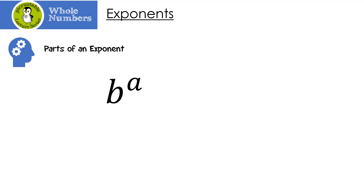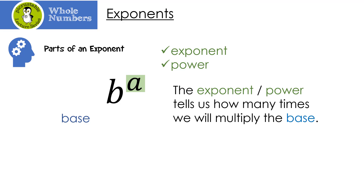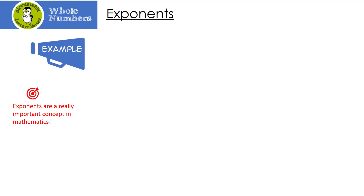Let's look at the different parts of an exponent. The B is called the base. A is called the exponent or the power. The exponent or power tells us how many times we will multiply the base. Exponents are really important concepts in mathematics, so it's super important that you understand how these work.